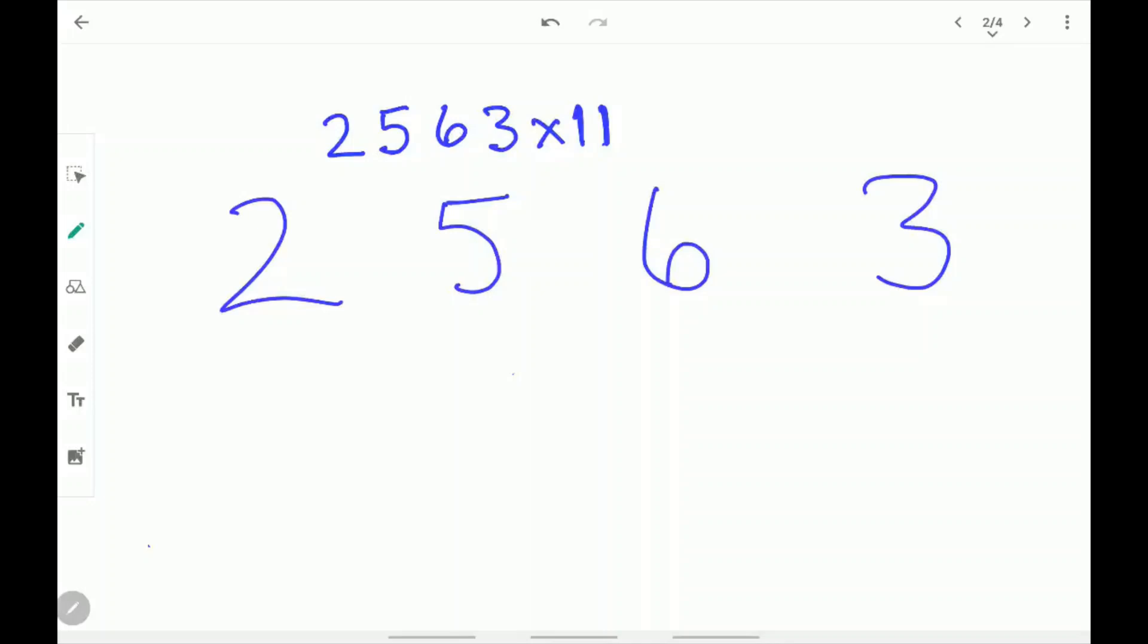Let's use 2563 times 11 as our example. Write 2563 like this. First write 3 as it is.